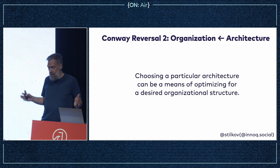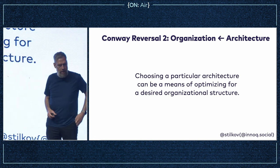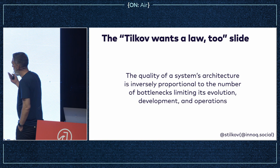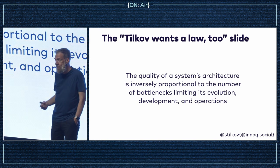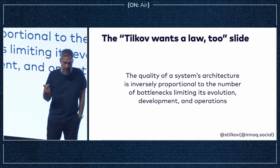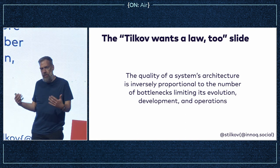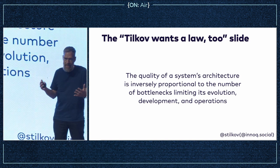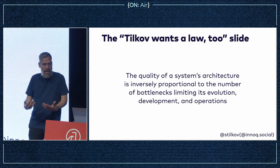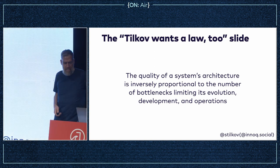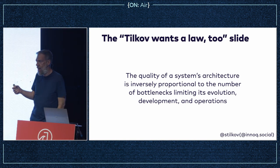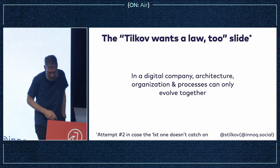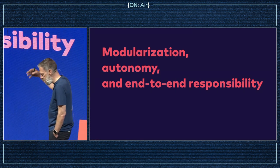Mel Conway is still active on Twitter — you should follow him. I also want to propose a law myself, which I've had in a number of talks the last two years but somehow it hasn't caught on. The idea is that architecture also creates bottlenecks structurally during your development process, your deployment process, and your runtime, and these affect how you can proceed as an organization. The quality of your architecture is directly related to how well it is designed to avoid bottlenecks.